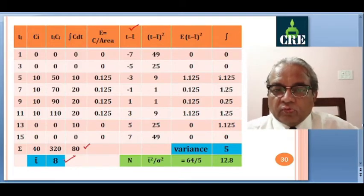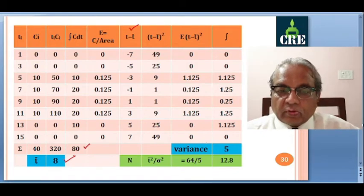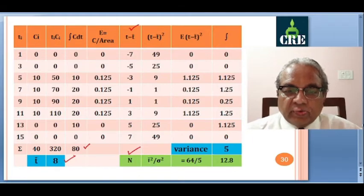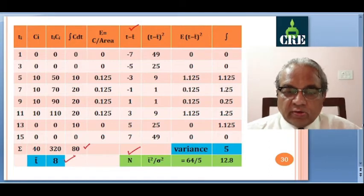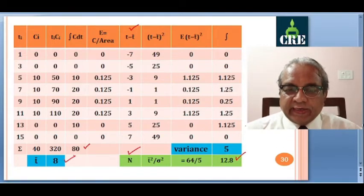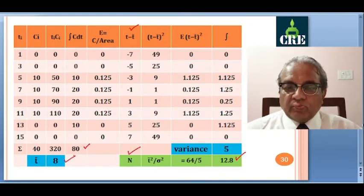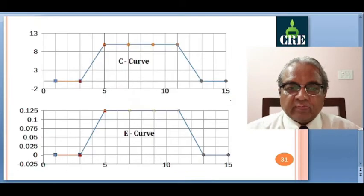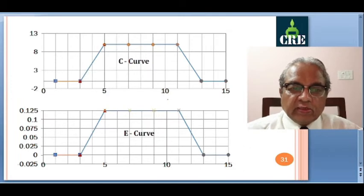The number of tanks N = T̄²/σ² = 64/5 = 12.8. We round up to the next integer, so 13 tanks are required. You always take the next integer value — you cannot have a fractional number of tanks.